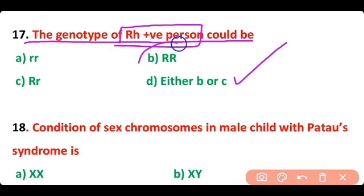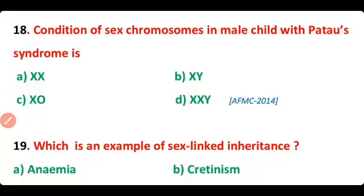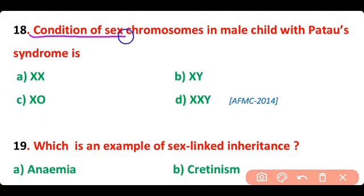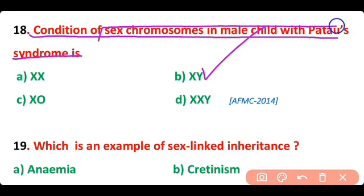Question number 17. The genotype of an Rh positive person could be — correct answer is option D. The genotype of an Rh positive person could be homozygous or heterozygous.